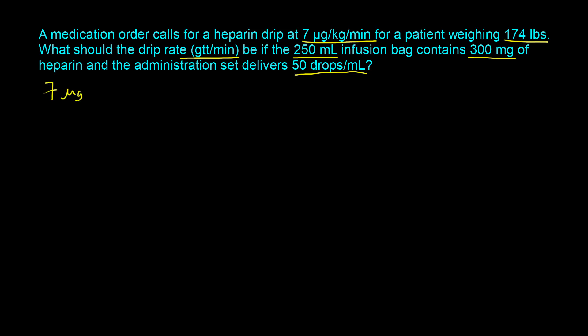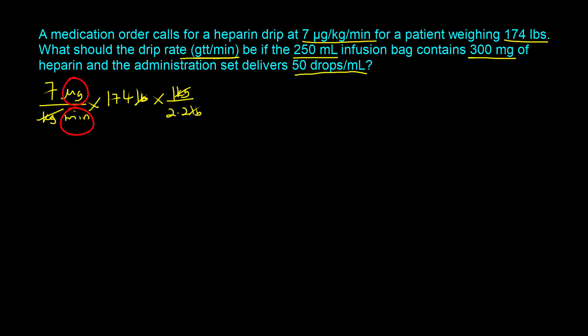We have 7 micrograms per kilogram per minute, and the goal is to get to drops per minute. We need to get rid of the kilogram in the denominator using the patient's weight of 174 pounds. Pounds cannot cancel kilograms, so we convert: 2.2 pounds makes 1 kilogram. The pounds cancel out and the kilogram cancels out. We are now in micrograms per minute, but we need to be in drops per minute.